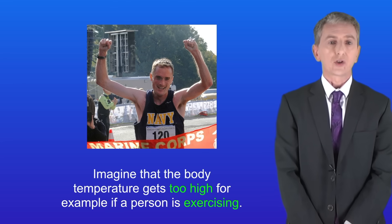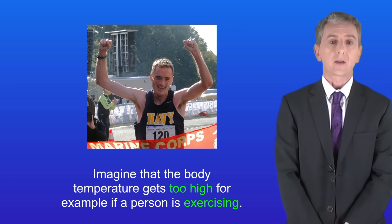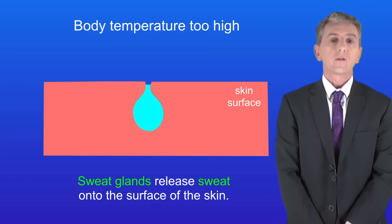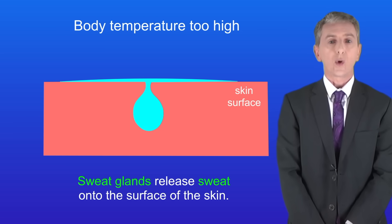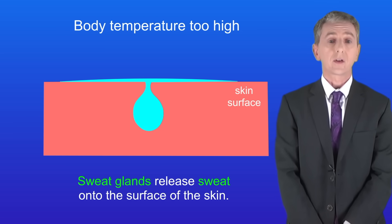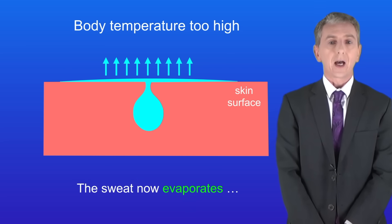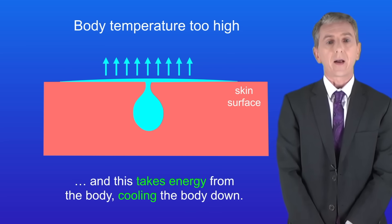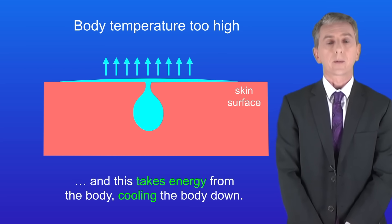Imagine that the body temperature gets too high, for example if a person is exercising. Firstly, sweat glands release sweat onto the surface of the skin. The sweat then evaporates and this takes energy from the body, cooling the body down.